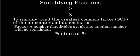Let's start by finding all the factors of 5, our numerator. 5 is a prime number, which means its only factors are 1 and 5 itself.